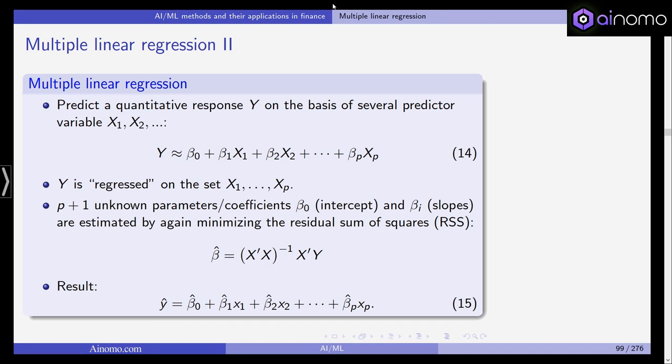If you've taken a statistics class, you will know that the vector of coefficients beta hat is given by X transpose times X, these are the matrices of observations for X1 until Xp. You take the matrix of X observations, transpose it, multiply it with X itself, take the inverse and multiply it again with the transpose of X times Y. You get those OLS coefficients in matrix notation. The result is you can predict Y using those coefficient estimates beta 0 hat plus beta 1 hat and so on times your observations X1 until Xp in equation 15.